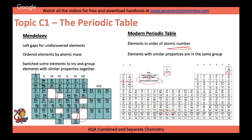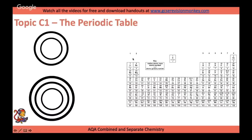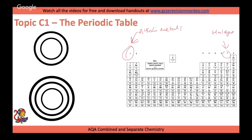Groups to know: group 1 are the alkali metals, group 7 are the halogens, group 0 are the noble gases, and the transition metals are in the middle.